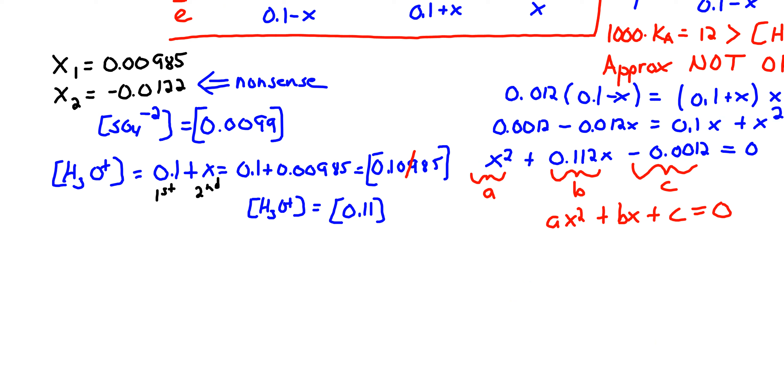To determine the total hydronium ion concentration, we have to add the first dissociation to the second. In this case, we see that the H3O+ released from the second dissociation is significant.